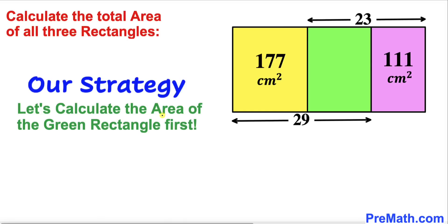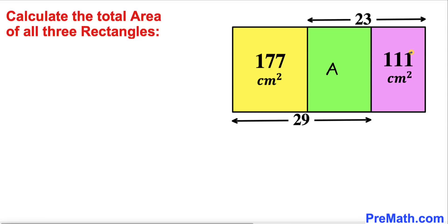Let's get started. Our strategy is to calculate the area of the green rectangle first, so let me call that area A. Now let's assume that the width of the big rectangle is x centimeter.